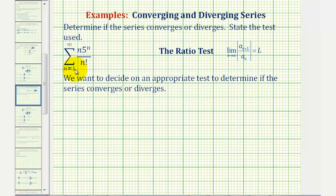Notice that since n starts at one and increases to positive infinity, this will always be positive, and therefore we can ignore the absolute value.